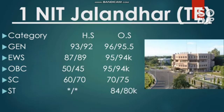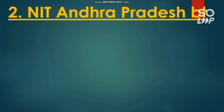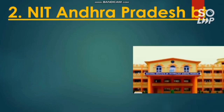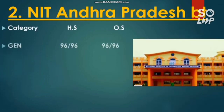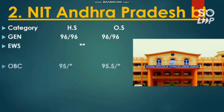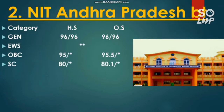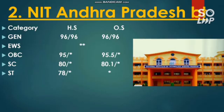NIT Andhra Pradesh: Biotechnology has the lowest cutoff. For General: 96 percentile for both male and female. There is no EWS seat reserved. OBC requires 95.5. Star marks indicate a category is not reserved in that branch. SC requires 80.1 percentile. For ST, there is no seat reserved for other state students.